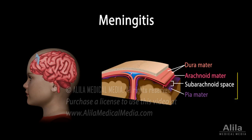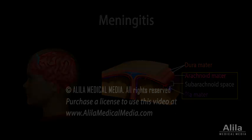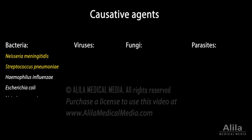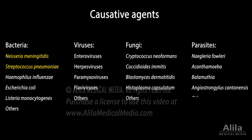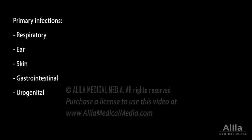Meningitis typically affects the arachnoid, subarachnoid space, and pia mater. Meningitis can be caused by a large number of various organisms, and different age groups are susceptible to different causative agents. In the majority of cases, the offending organism originates from an infection elsewhere in the body and gets to the central nervous system by several ways.